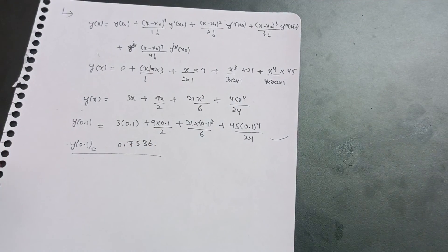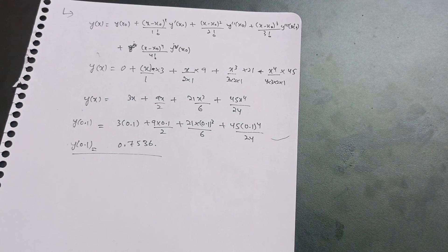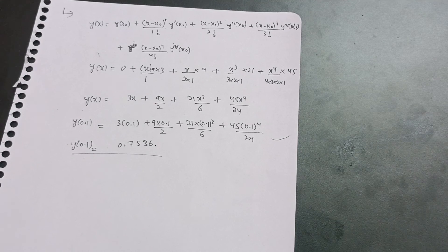This is the Taylor series method — very simple. You just need to calculate y dash, y double dash, y triple dash of x₀, and then put those values into the formula. Thanks for watching.